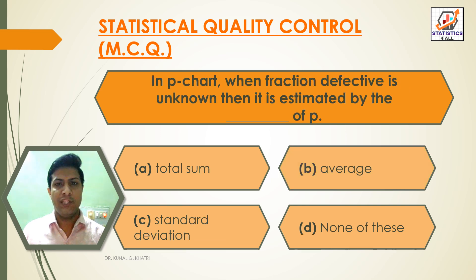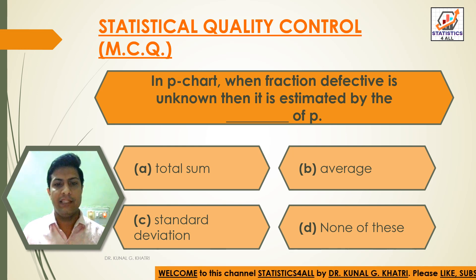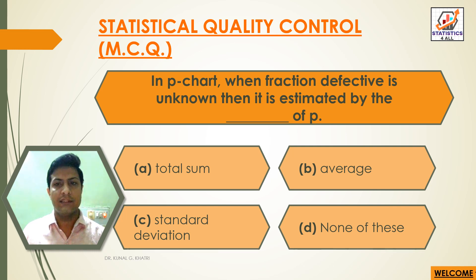Question 13: In P chart, when fraction defective is unknown, then it is estimated by the: Option A: Total sum, Option B: Average, Option C: Standard deviation, Option D: None of these. Answer: Option B — Average. When fraction defective is unknown, it is estimated by the average of P.